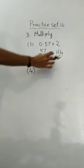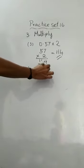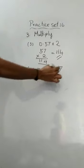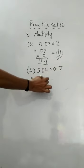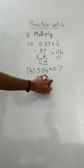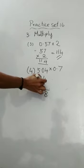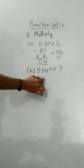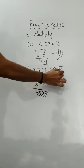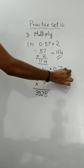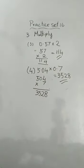Next question: 5.04 into 0.7. Write 504 into 7. 4 sevens are 28, carry 2; 0 sevens are 0, plus 2 gives 2; 5 sevens are 35. The answer is 3528. How many decimal places? 2 plus 1 equals 3, so the answer is 3.528.